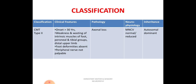Type 2 HMSN starts after the age of 30 years. The weakness and wasting pattern is the same as Type 1, involving intrinsic muscles of the foot, peroneal and tibial groups of the lower leg, and distal upper limb muscles. However, in Type 2, foot deformities are absent and peripheral nerves are not palpable. The pathology is axonal loss rather than demyelination. Motor nerve conduction velocity may be normal or slightly reduced. Genetically, this is also autosomal dominant.